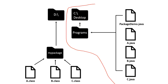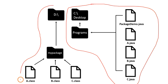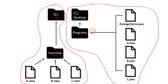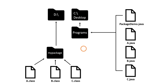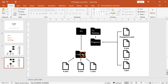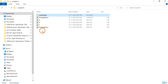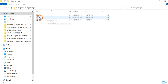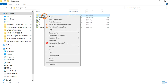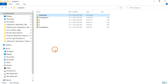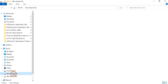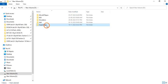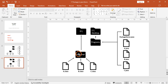In this second example, the source files are in one location and the package is in another location. The mypackage folder is stored in the D drive, while the Java source files are in the programs folder on the desktop. So I'll cut the mypackage folder from the programs folder, go to the D drive, and paste it there. Your package is now in D drive.